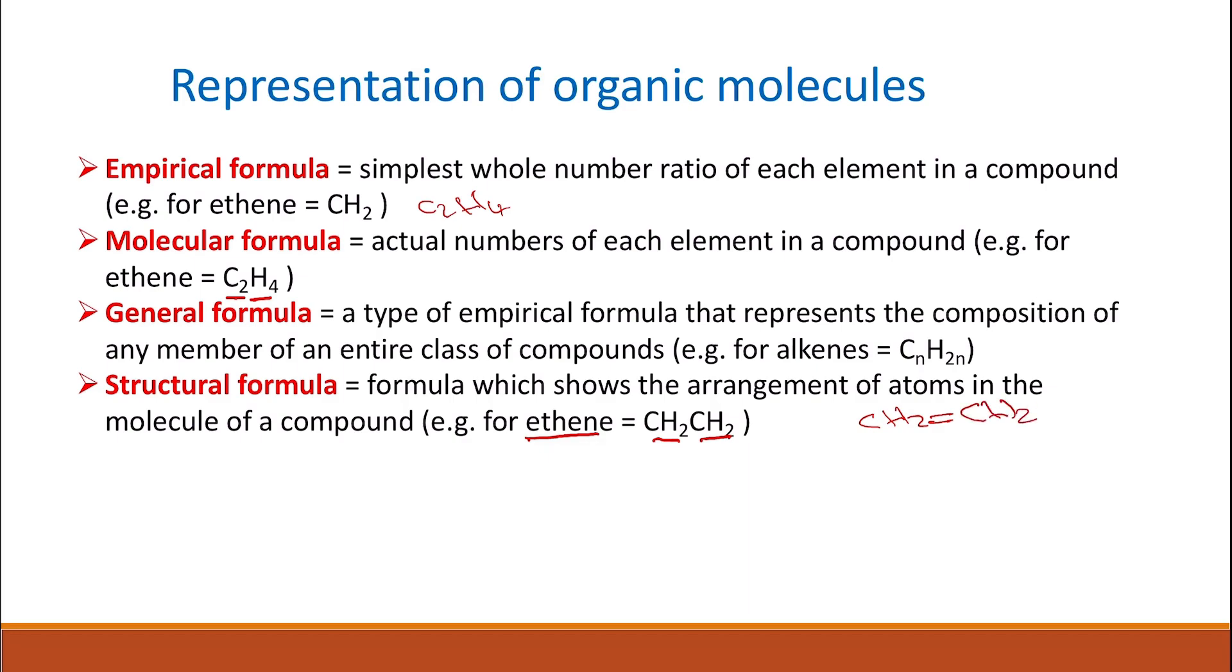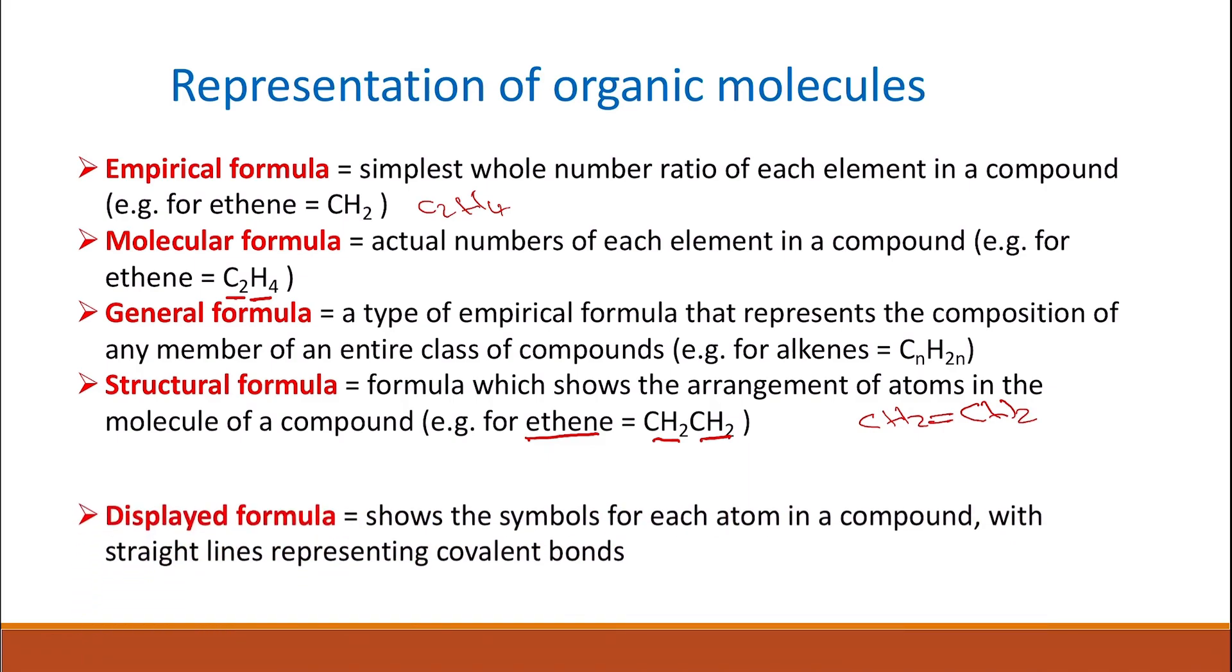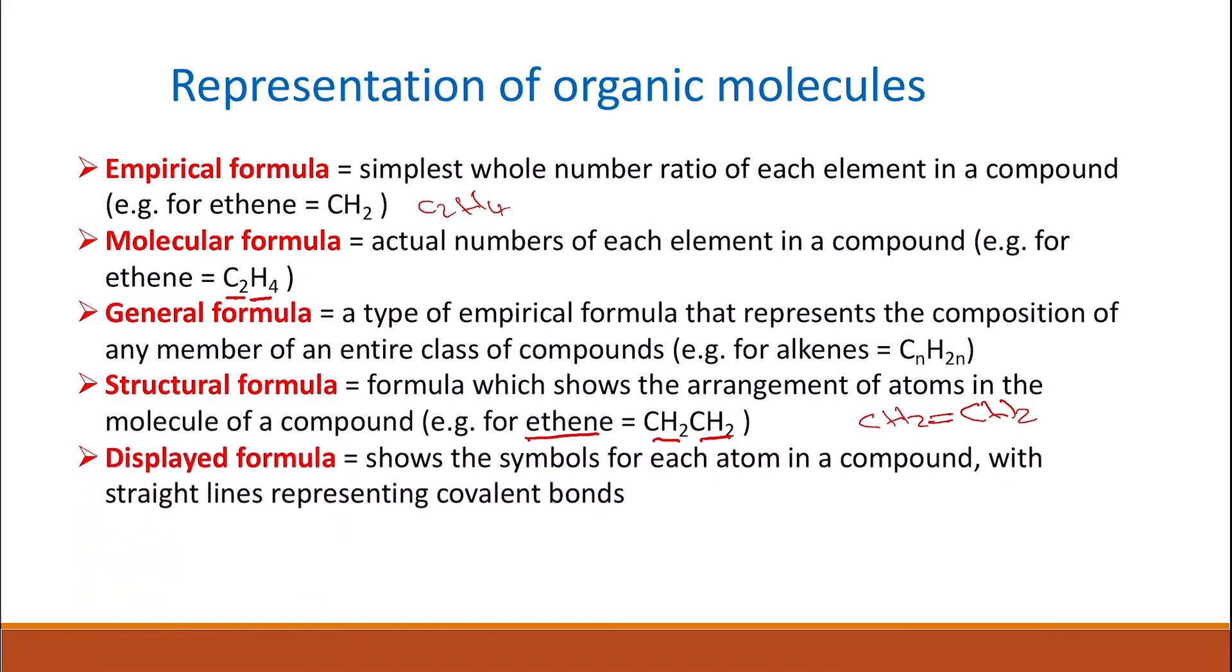So this is the structural formula of ethene. We also have the displayed formula. Displayed formula will show the symbol of each atom in a compound with straight lines representing the covalent bonds.